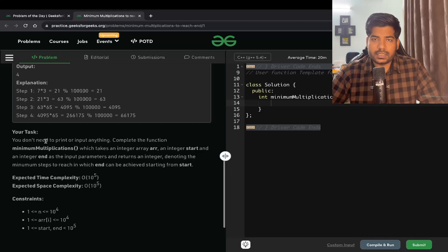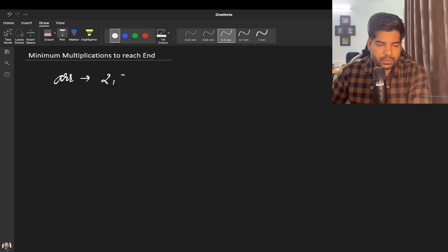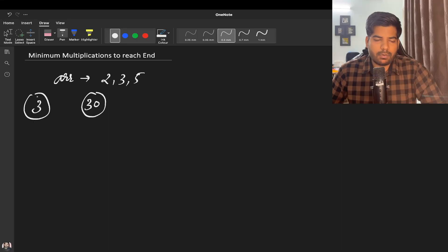Let's discuss this question in more detail. Here our array is 2, 3, and 5. Start point is 3 and end point is 30. Initially it may seem like this problem is array-based, but let me tell you this problem is from graphs.